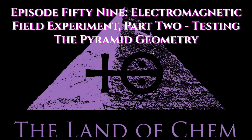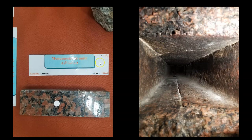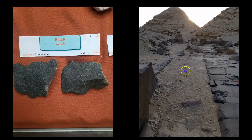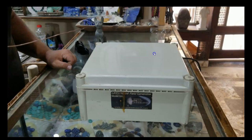In episode 33, I tested the properties of amorphous, irregularly shaped samples of the different types of stone utilized in the construction of the Egyptian pyramids — starting with limestone, then moving on to red granite, black basalt, and white calcite crystal — all in proximity to the electromagnetic field produced by this machine, the Lifestream Generator.